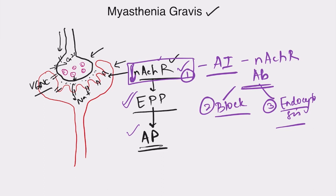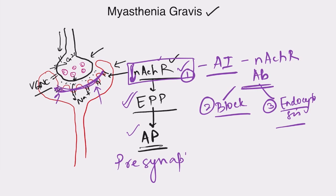In myasthenia gravis, the number of nAChRs on the postsynaptic membrane is reduced. Also, you can see there are certain folds shown in the diagram — there is flattening of these folds. Normally these folds increase the surface area so that more receptors can be accommodated. In MG, there is flattening of these folds and a decrease in nAChR numbers.